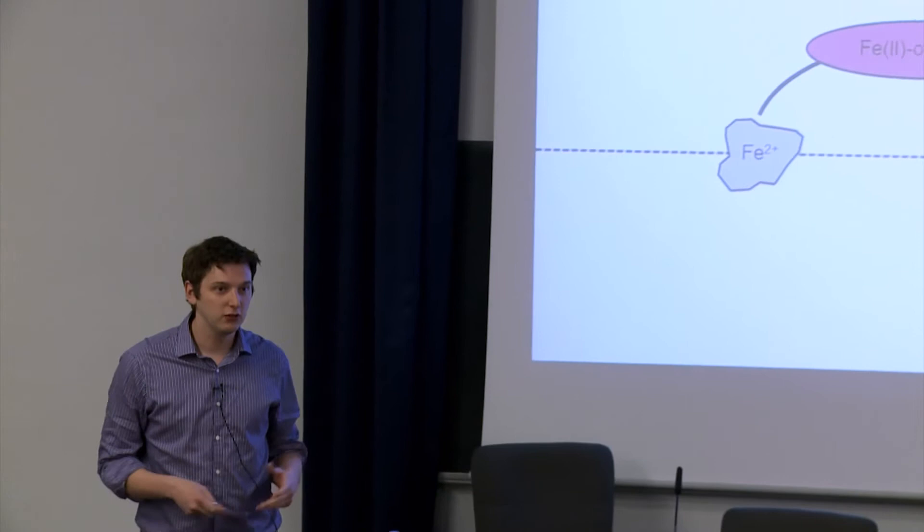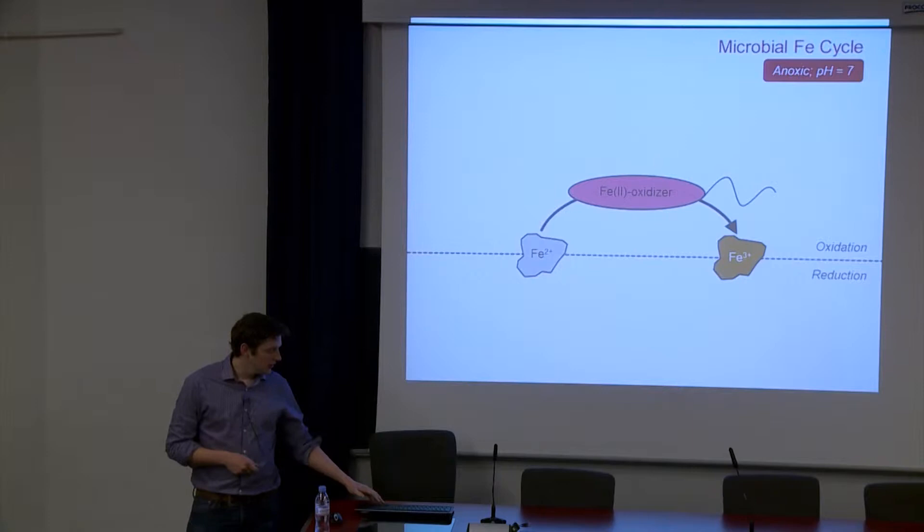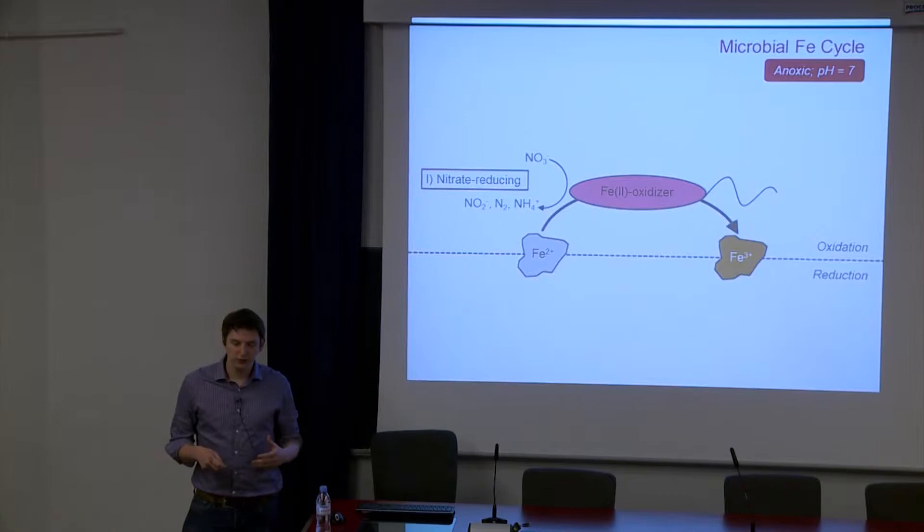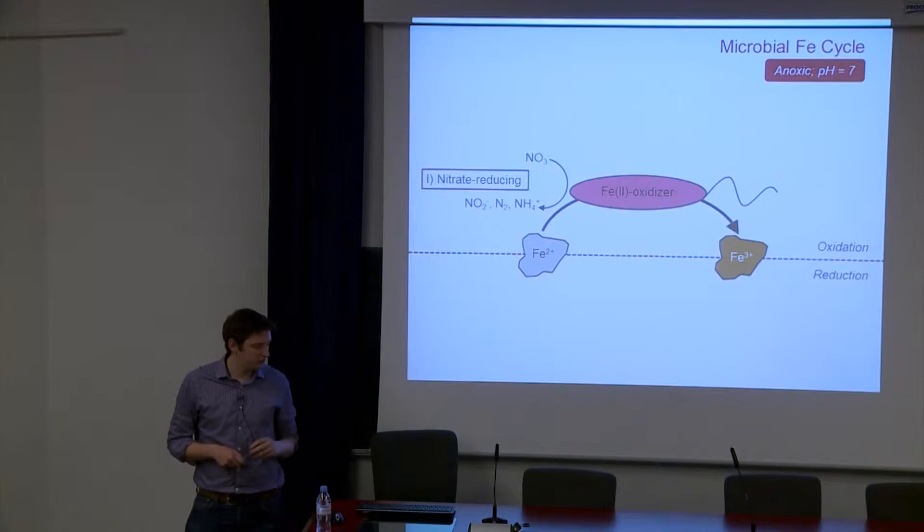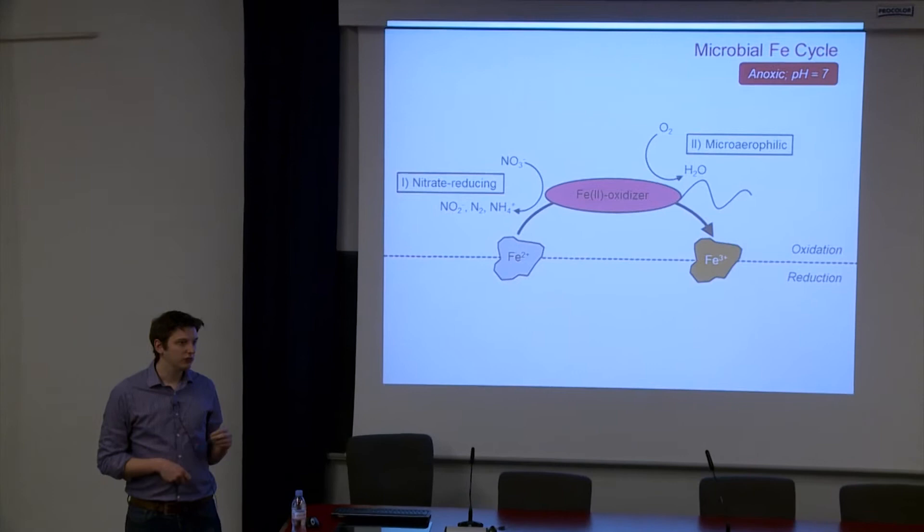So the microbial iron redox cycle. There is iron oxidizing bacteria and iron reducing bacteria, highly abundant in the environment. When we think of iron oxidizing bacteria, there are three groups. These are nitrate-reducing bacteria which reduce nitrate, leading to oxidation of iron 2 in the environment. It's not quite sure whether this is abiotically driven oxidation yet, but that's one group. There is microaerophilic bacteria.